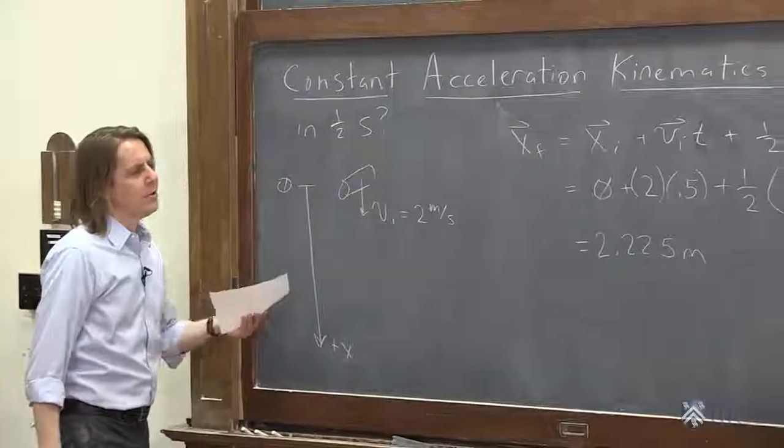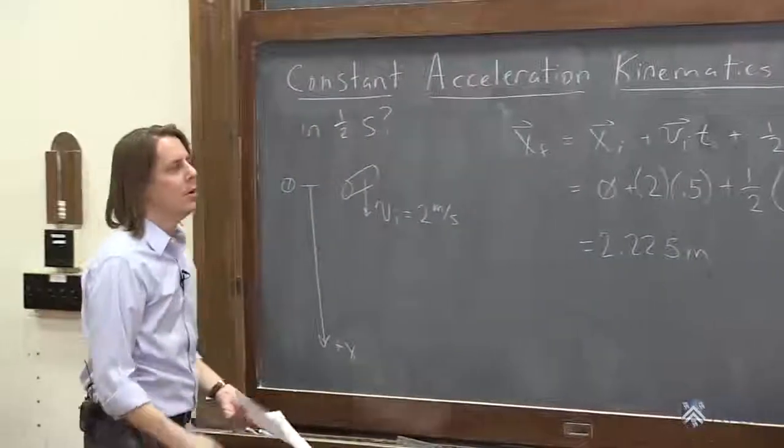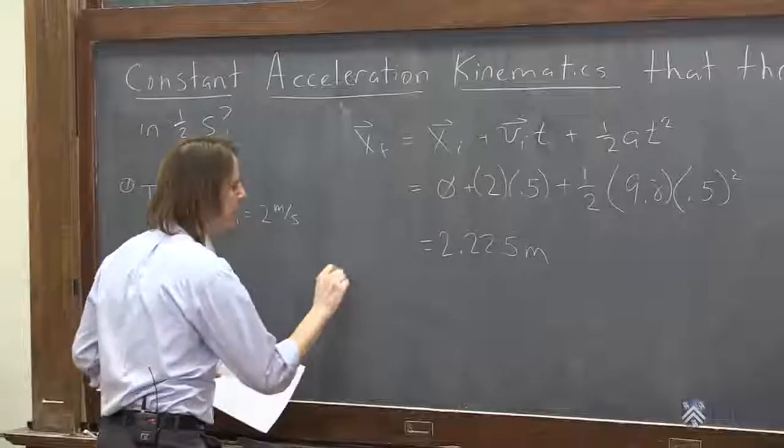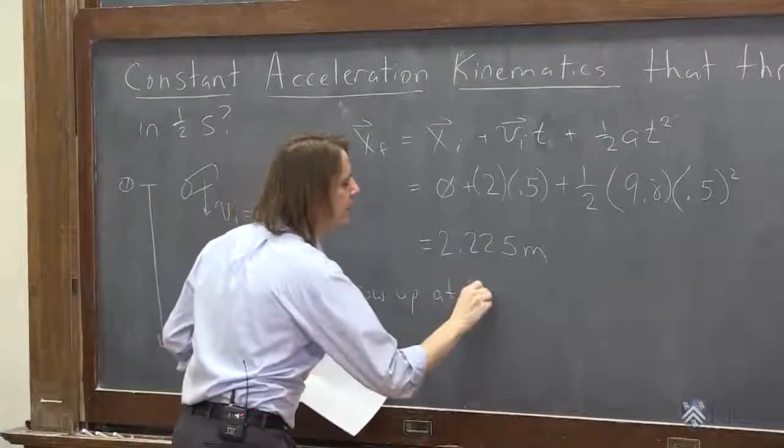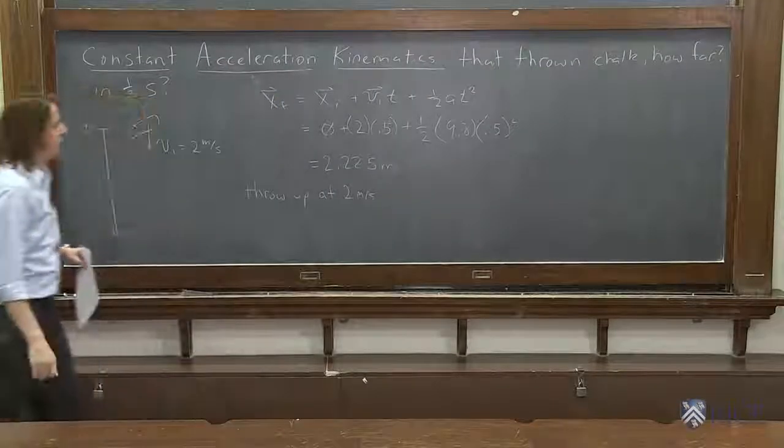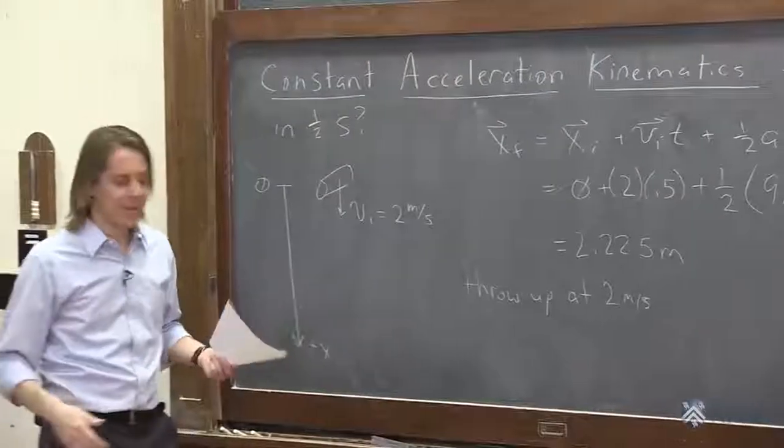So the only tricky thing here is you've got to think about, you've got all these signs right. Right here, everything was positive because everything was down. What if we did the opposite? What if we throw it up at 2 meters per second? That sounds a little bad, but let's just go with it. We throw it up at 2 meters per second, meaning I'm so happy with the class. Oh, look at that. It goes up.